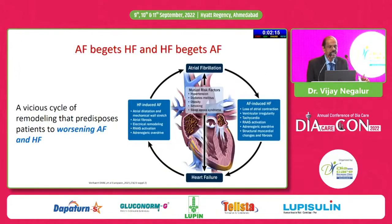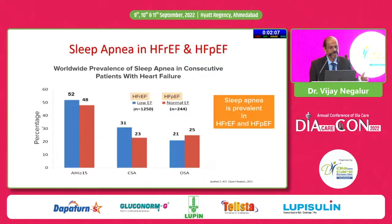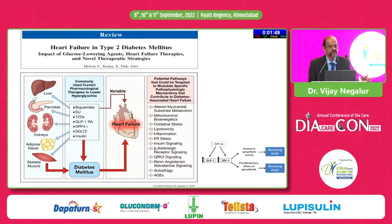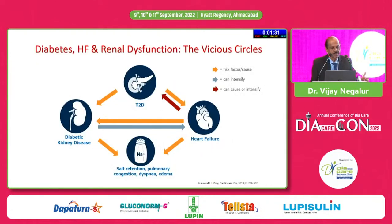Atrial fibrillation begets heart failure and heart failure begets atrial fibrillation — a complex bi-directional association, very common in patients with diabetes. Sleep apnea also increases the risk of both preserved and reduced ejection fraction heart failure, with 40 to 80 percent of patients with an AHI score above 15 having heart failure. Many diabetes medications such as DPP-4 inhibitors and insulin can worsen heart failure, while SGLT2 inhibitors improve it.